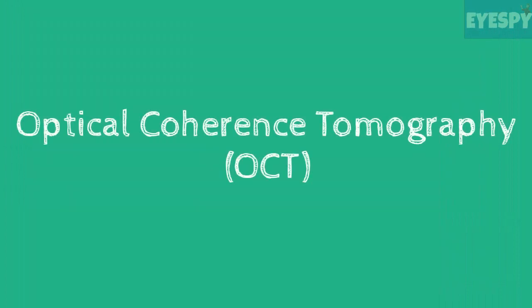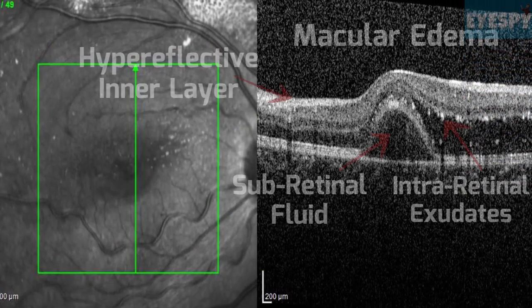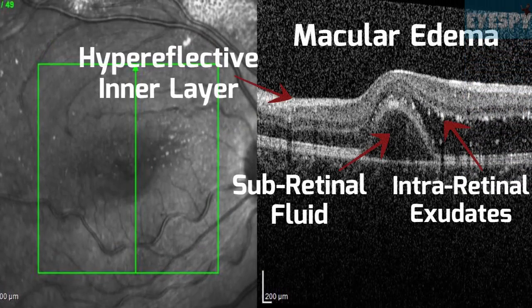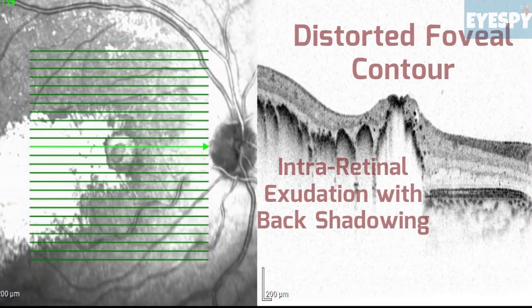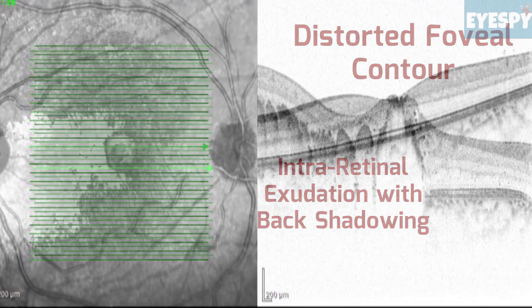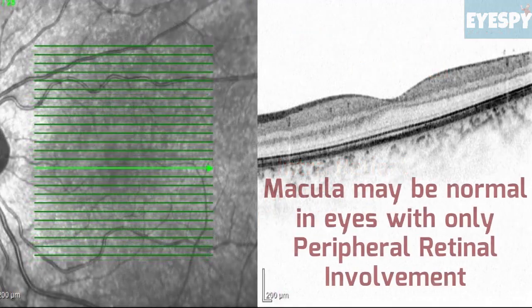On OCT, macular edema is seen as increased central macular thickness along with distorted foveal contour and hyper-reflective inner layers. The intra-retinal exudates appear hyper-reflective with intense back-shadowing. Eyes with only peripheral retinal involvement may have a normal macula.